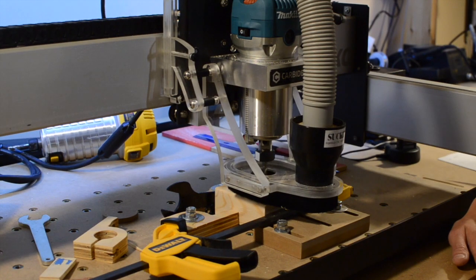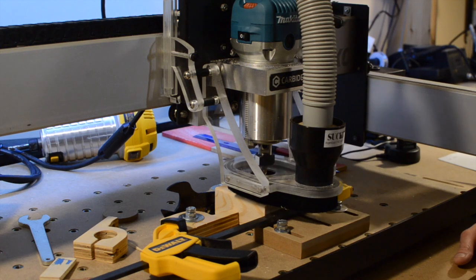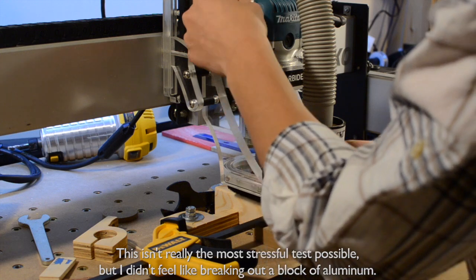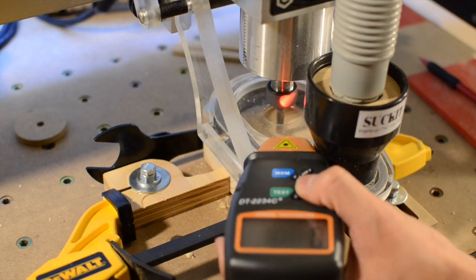For my final data point, I wanted to see how well each router did under load. So to do that, I ran a pretty basic test. Take a block of wood, in this case some scraps cut from a 2x4, and just plow through it with a Shapeoko. I'm looking to see how much each router bogs down, if at all.